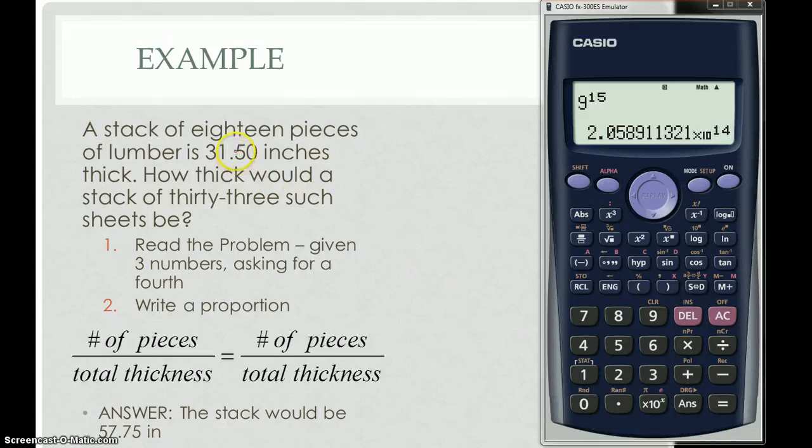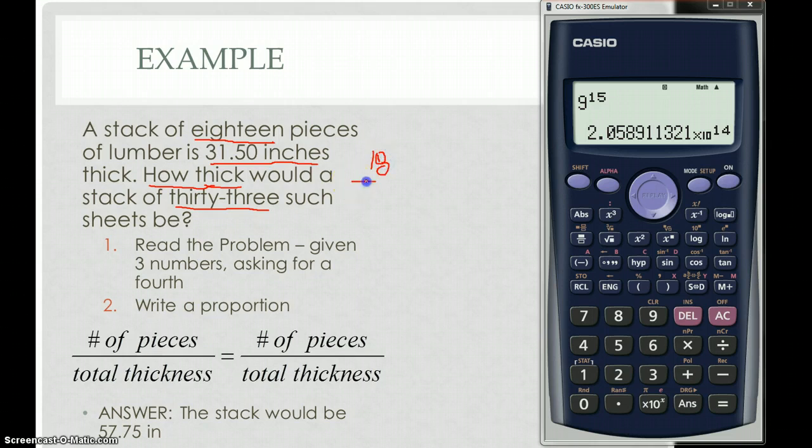So I have a stack of 18 pieces of lumber, 18 pieces. And the whole stack is 31 1/2 inches thick. I want to know how thick a stack of 33 sheets would be. So I'm given three pieces of information, and I want a fourth. And I have 18 pieces and 33 pieces, 31 1/2 inches, and how many inches. So I have pieces to thickness and pieces to thickness. So I set up this fraction problem. So I have 18 over 31.5, and that equals 33 sheets over a thickness I don't know, x.